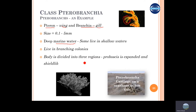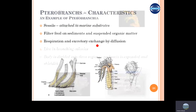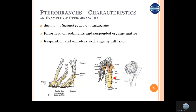The body is divided into three regions again — the proboscis, which is expanded and shield-like. As you can see in the next slide, the proboscis is the large shield-like structure.